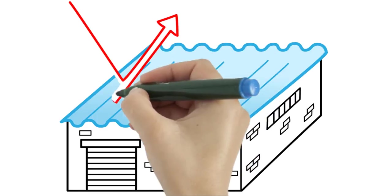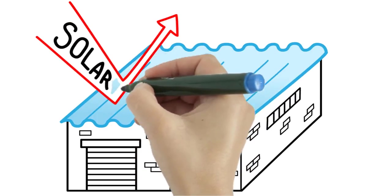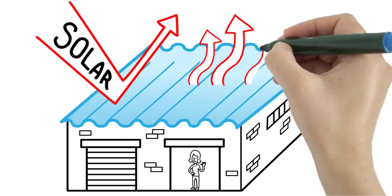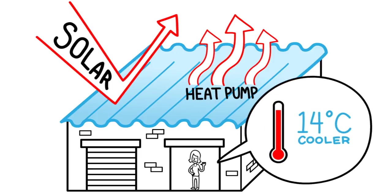SkyCool's unique properties reflect up to 90% of the solar heat that enters a building and acts as a passive heat pump, cooling the building's interior temperature by up to 14 degrees.